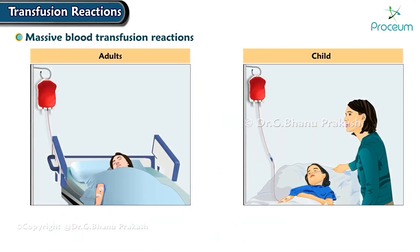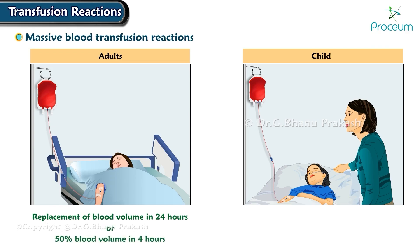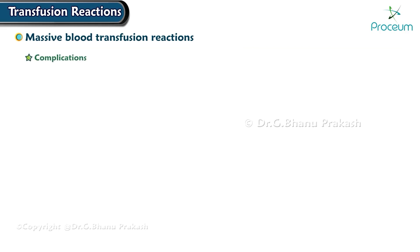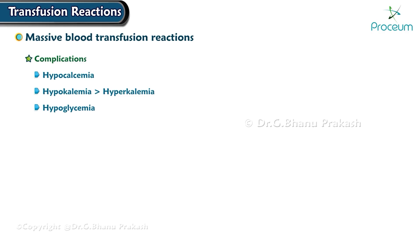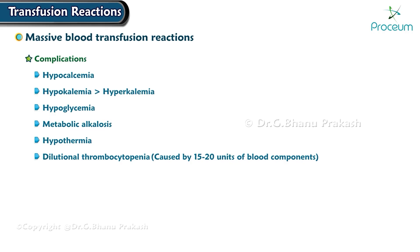Massive blood transfusion reactions: massive blood transfusion is defined as replacement of blood volume in 24 hours, or more than 50% blood volume in four hours in adults, or transfusion of more than 40 milliliters per kilogram blood in a child. Complications include hypocalcemia, hypokalemia (occurring more often than hyperkalemia), hypoglycemia (seen more often than hyperglycemia), metabolic alkalosis, hypothermia, dilutional thrombocytopenia caused by 15 to 20 units of blood components, and dilutional coagulopathy leading to disseminated intravascular coagulation — the most common cause of mortality following a massive blood transfusion.